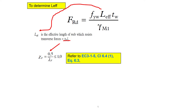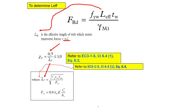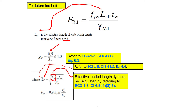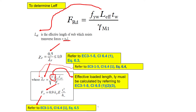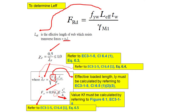However, before you can determine the reduction factor, you first need to calculate the lambda bar F parameter by referring to EC3 part 1.5, Clause 6.4-1, Equation 6.4. The effective loaded length L_Y can be determined by referring to Clause 6.5-1, 2, and 3. The F_CR value is determined from EC3 part 1.5, Clause 6.4-1, Equation 6.5. The value of K_F can be determined based on Figure 6.1 of EC3 part 1.5. So to determine the reduction factor, you first need lambda bar F; and to determine lambda bar F, you must first calculate L_Y, F_CR, and K_F.